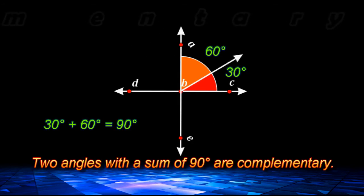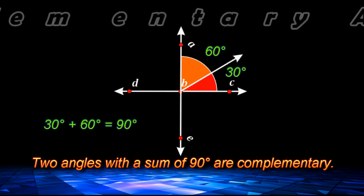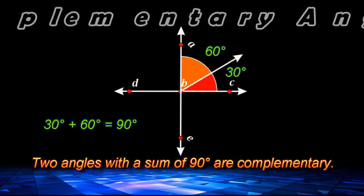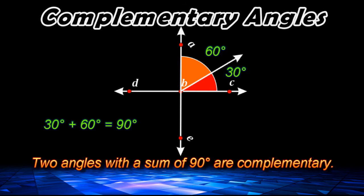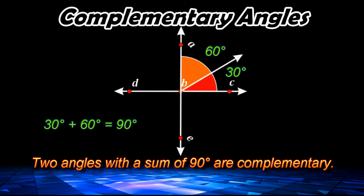Complementary angles are any two angles that, when added together, have a sum of 90 degrees. This example shows a 30-degree angle being added to a 60-degree angle for a total of 90 degrees. So those two angles would be considered complementary.